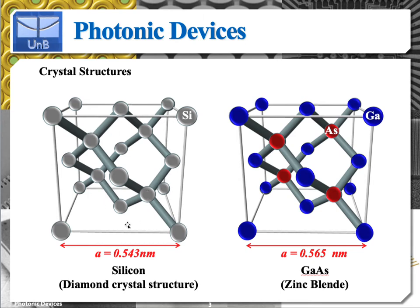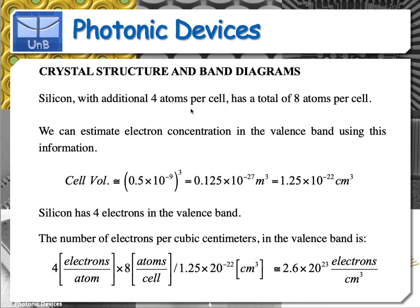These atoms are entirely within the unit cell. So we have to account for these four additional atoms as well. Silicon, with these additional four atoms per unit cell, has a total of eight atoms. We saw that the contribution of the vertex atoms plus the face atoms was four; we sum that to these other four, we get eight. Therefore, we can estimate the electron concentration in the valence band using this information.